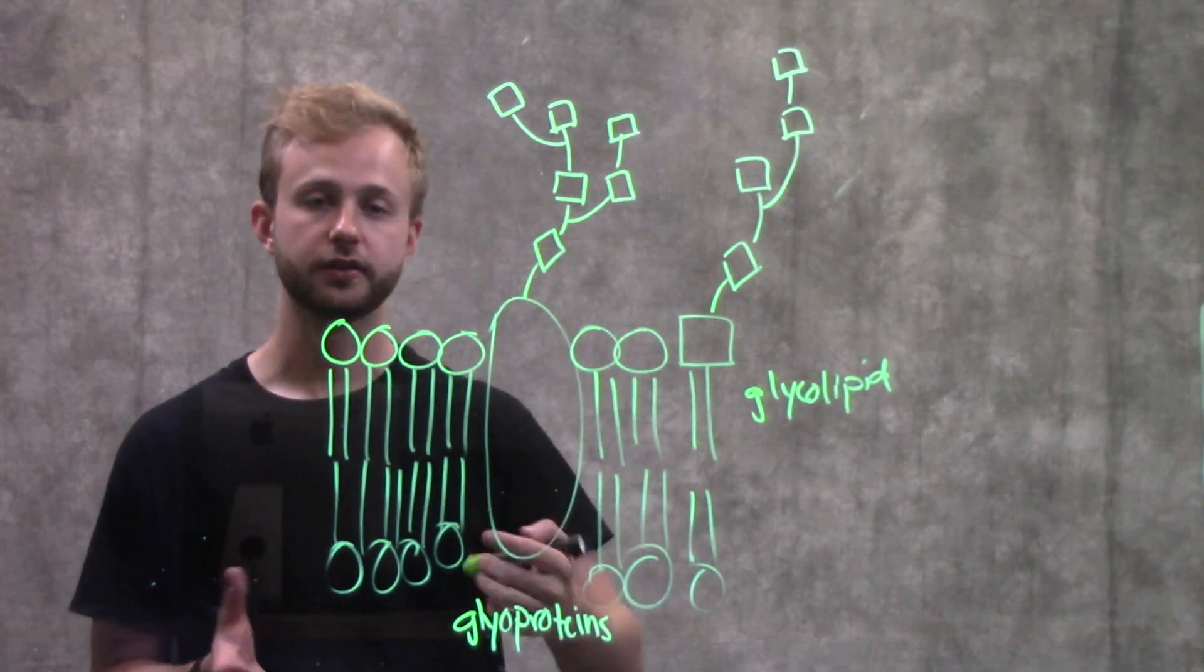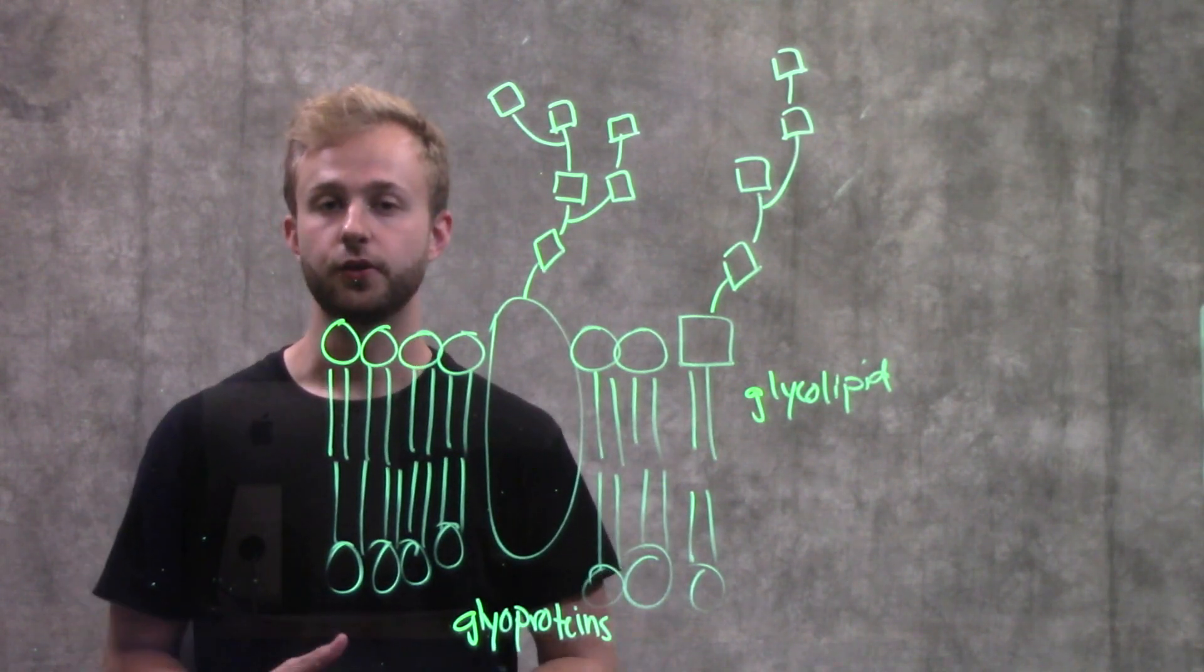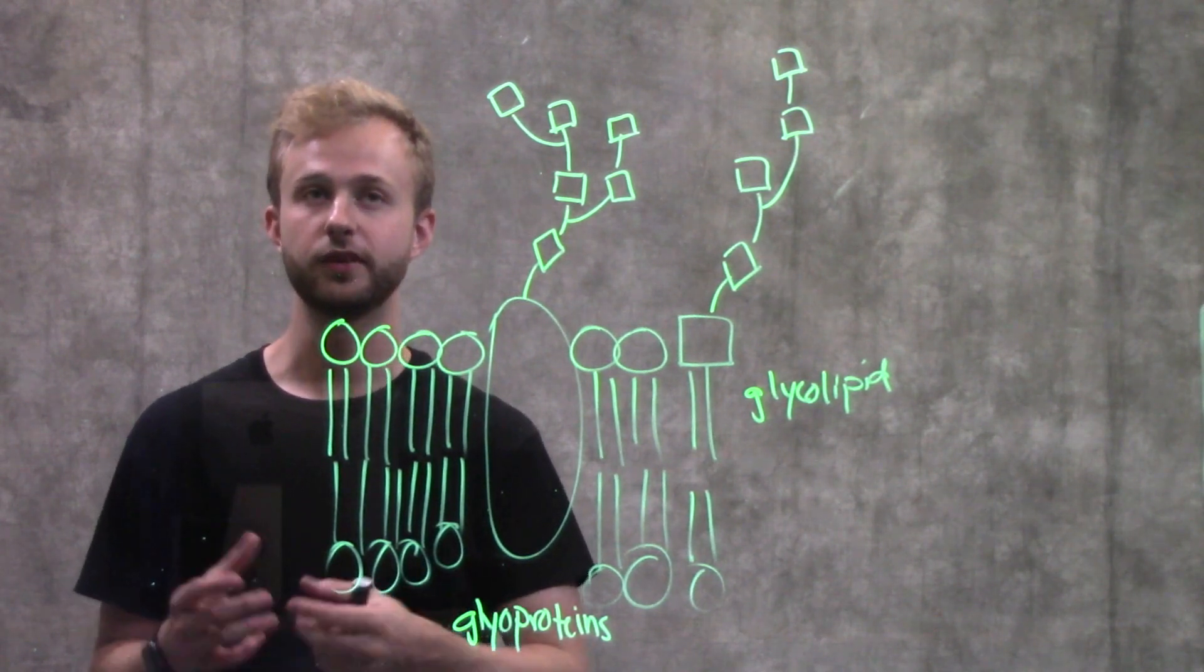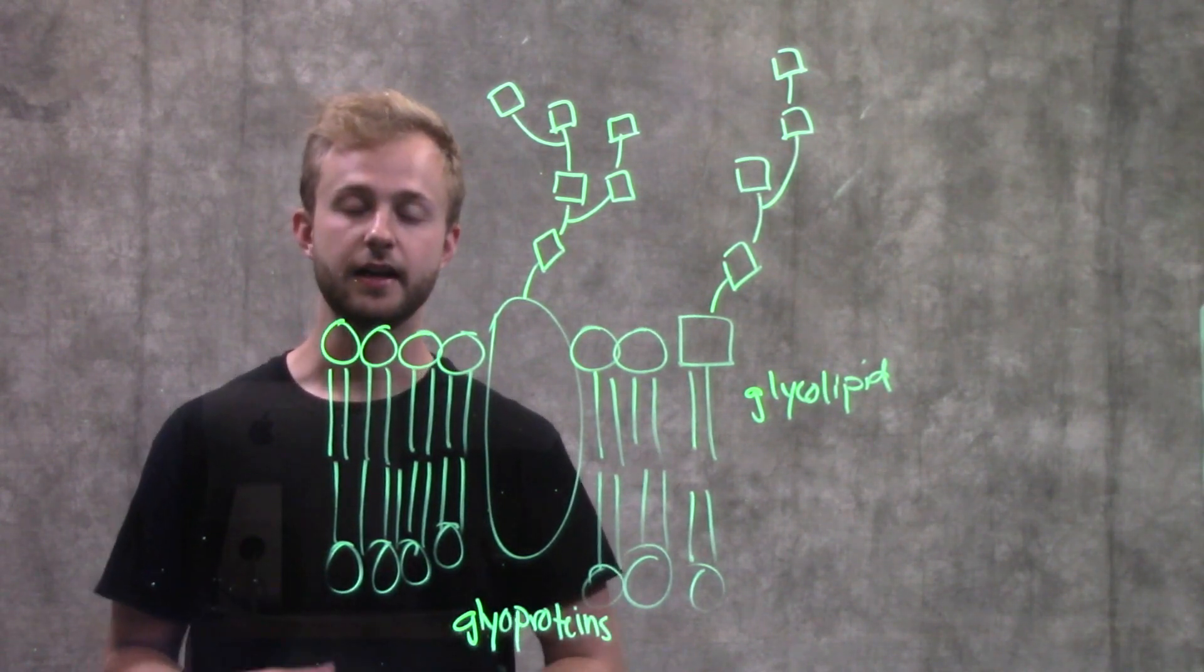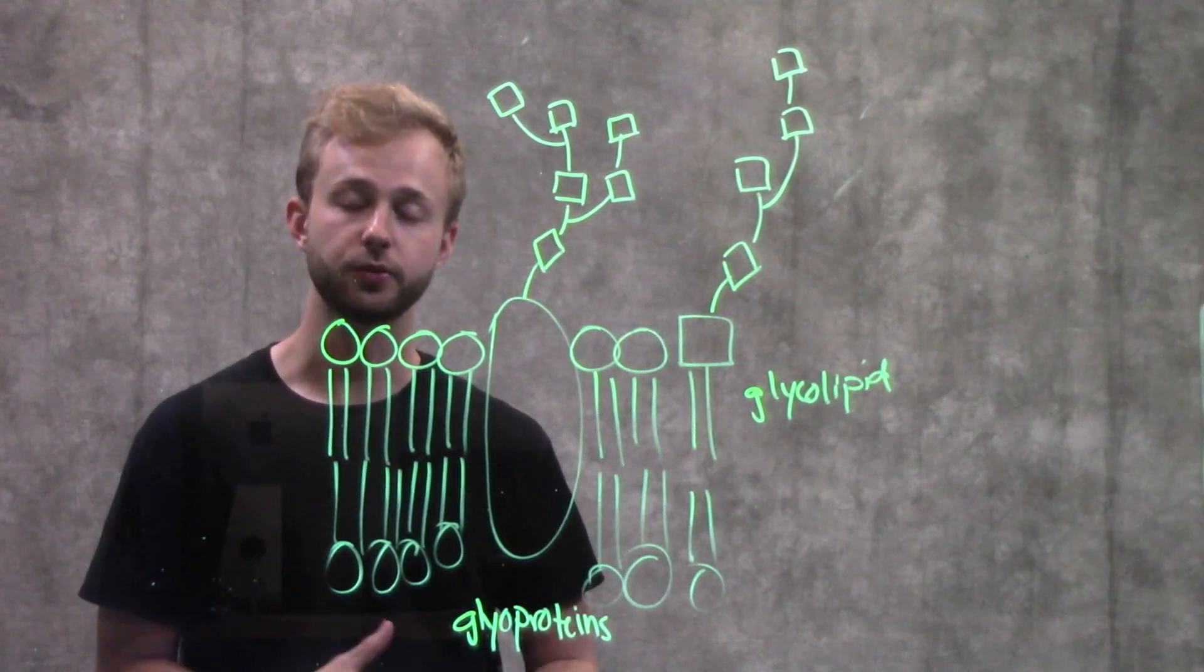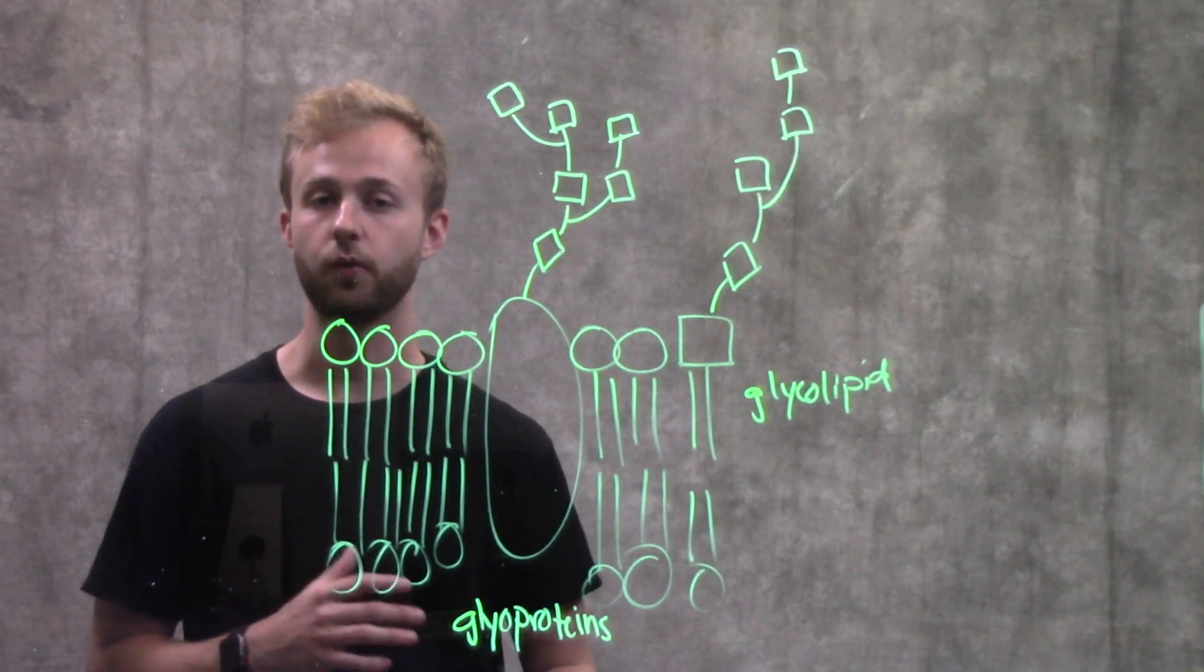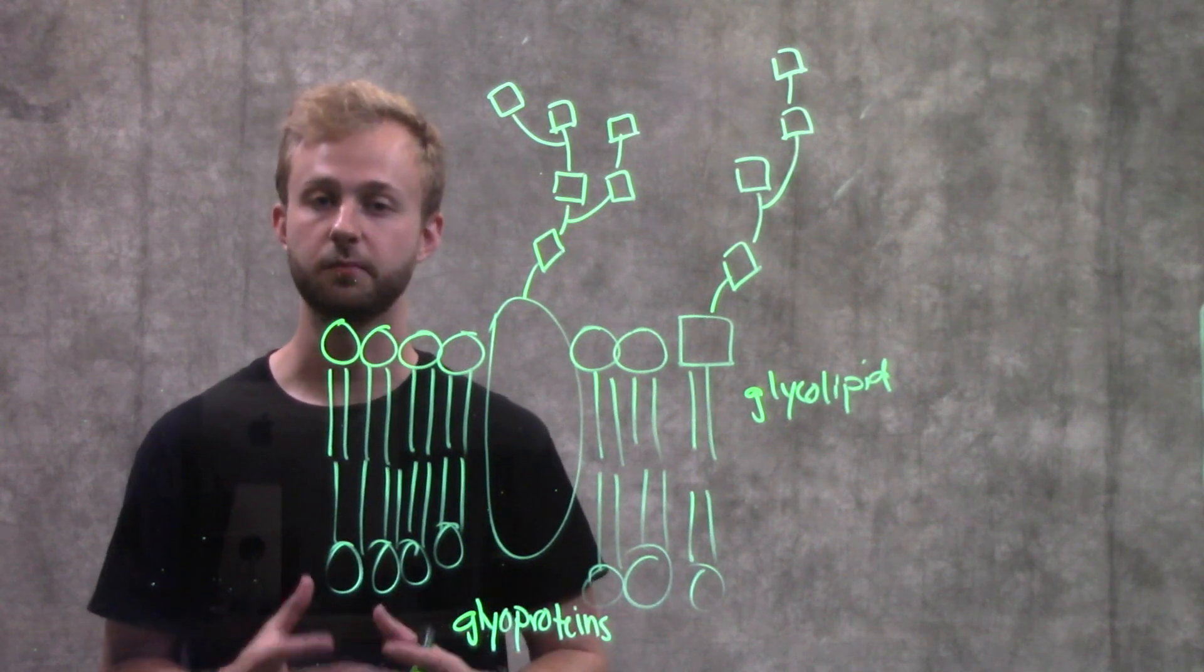These markers are very specific. They are very specific to species. Even within a species, they can be very different. And even within an individual, they can be very different depending on cell type or tissue type or what's going on with that cell or where it is in the body.